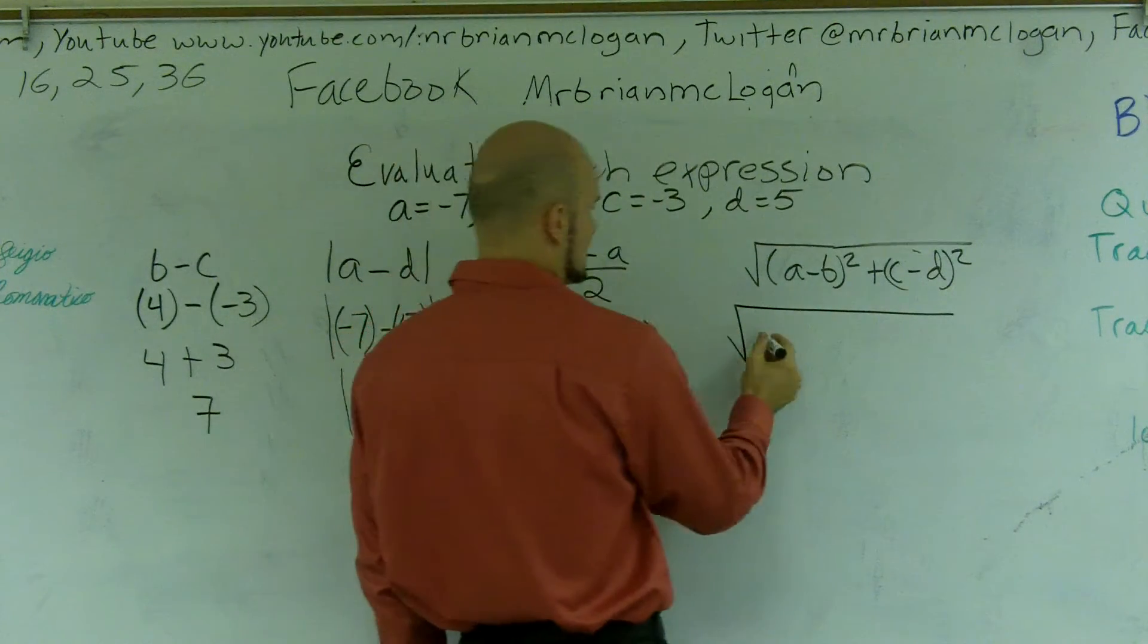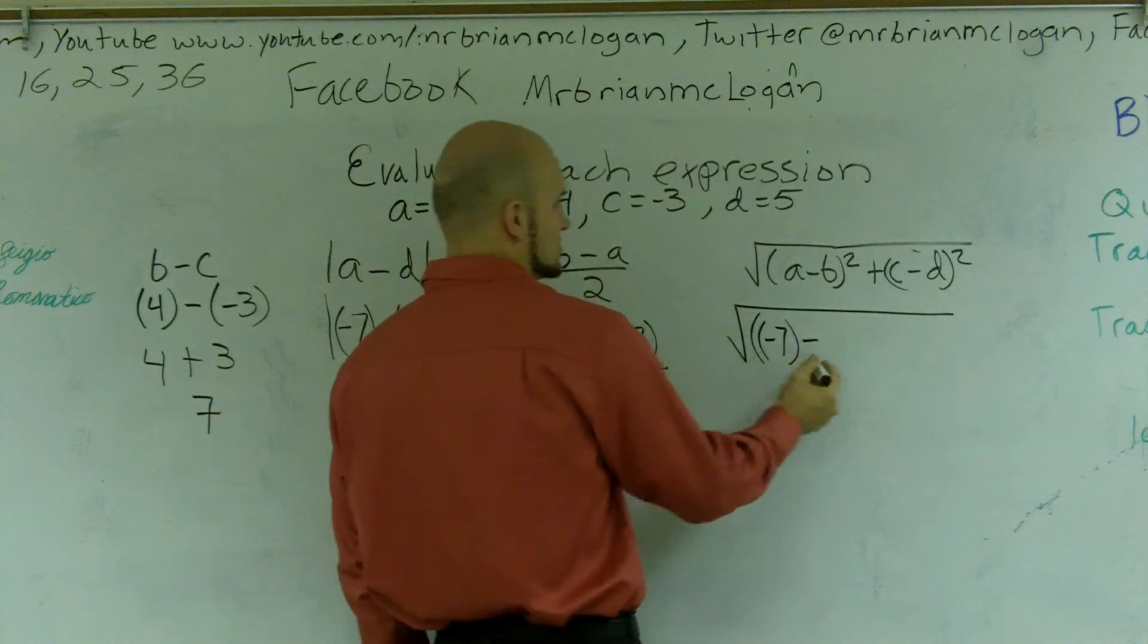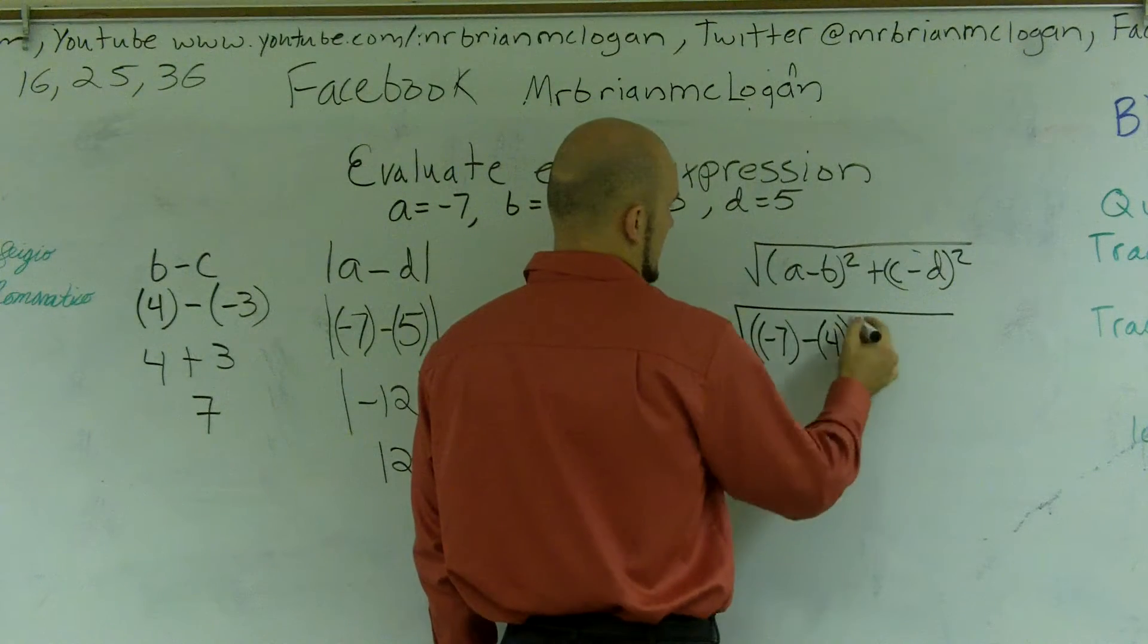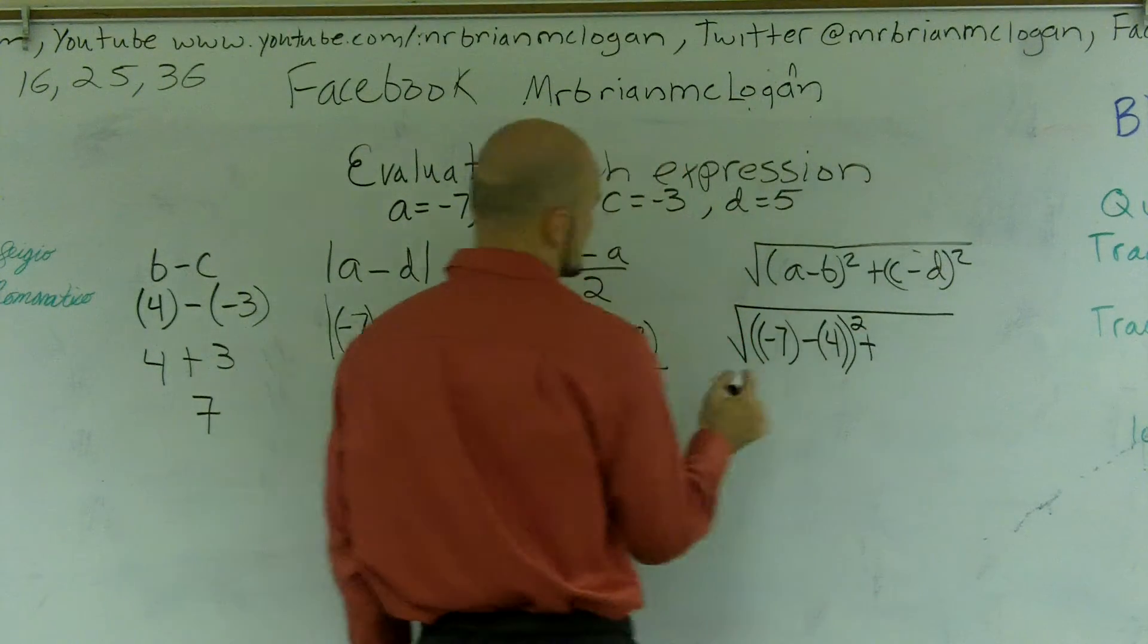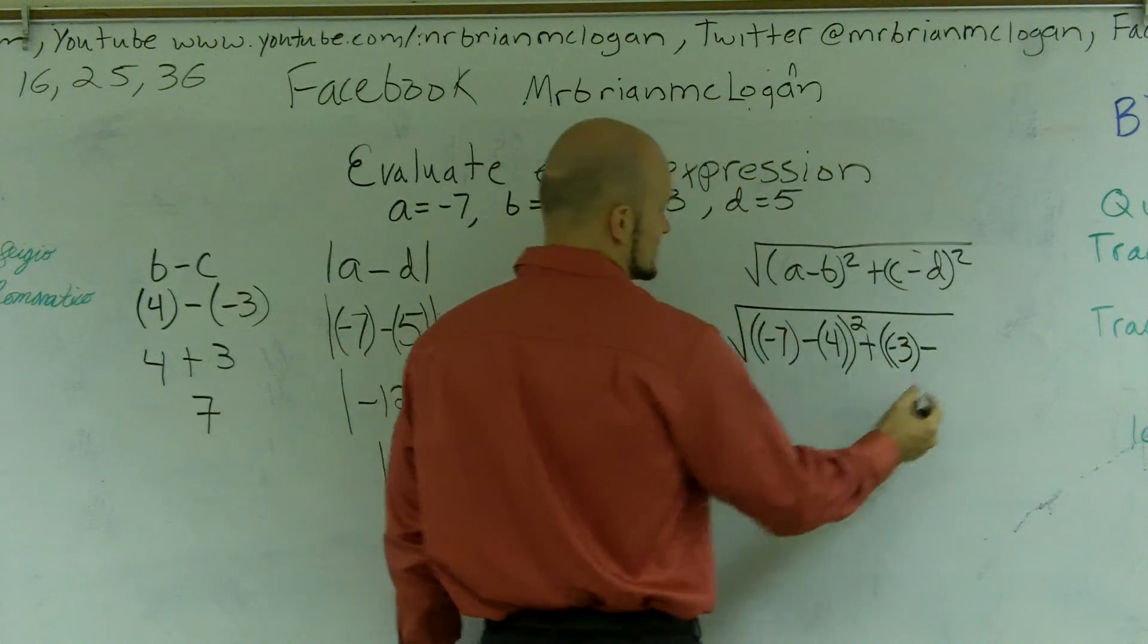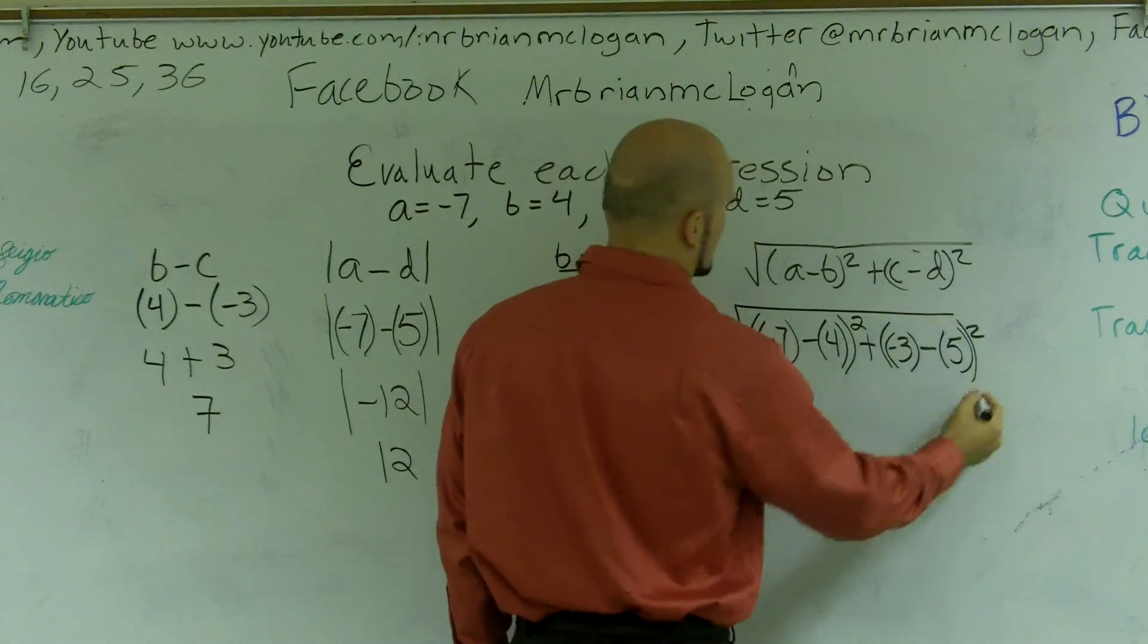a is negative 7 minus b, which is 4, square that, plus c, which is a negative 3, minus d, which is a 5, close parentheses.